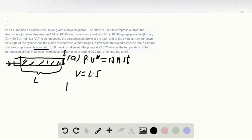So we have P initial times S times L initial to the power gamma equals P final times S times L final to the power gamma.